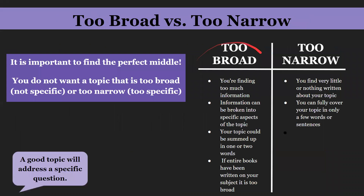You'll know if a topic is too broad if you're finding too much information — if there's way too much information on the internet, in a book, or any other source. For example, if you looked up dogs you're going to find a ton of information: different types of dogs, where dogs originated from. That's way too much to do a paper on unless you're planning on writing a book.